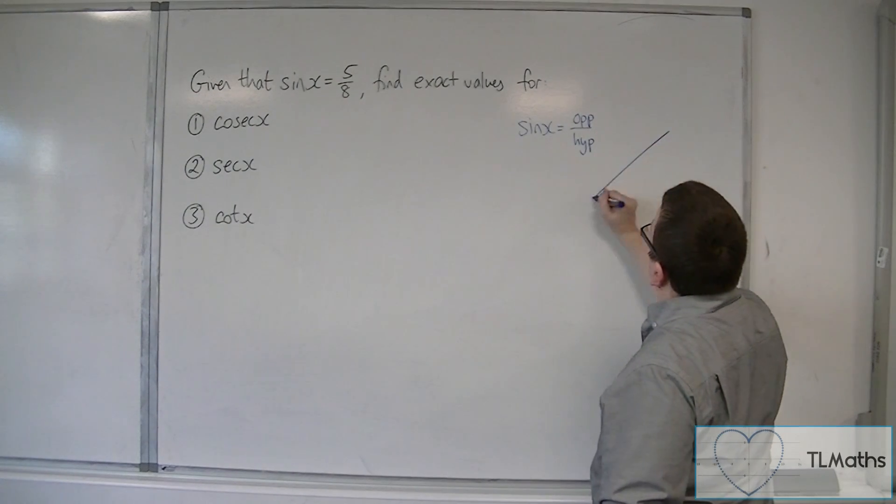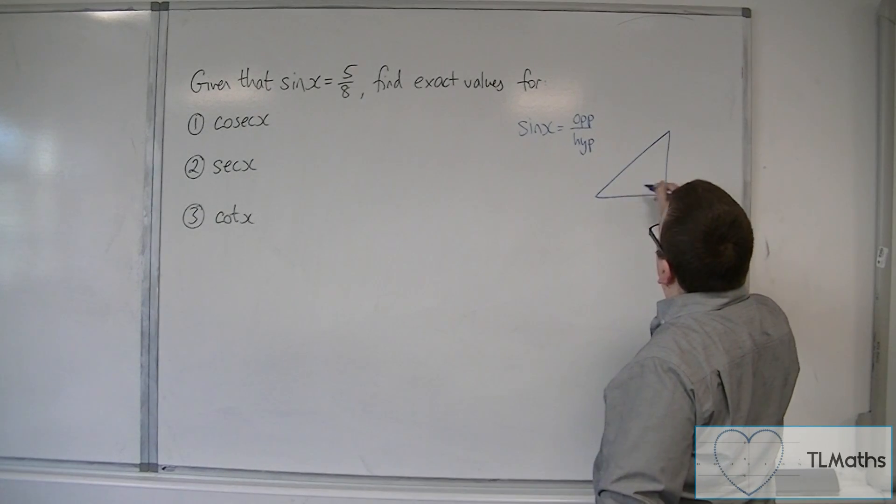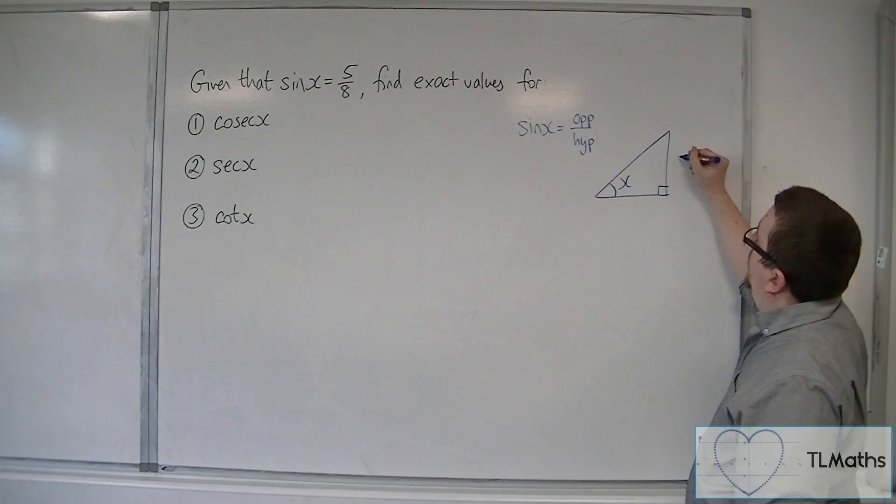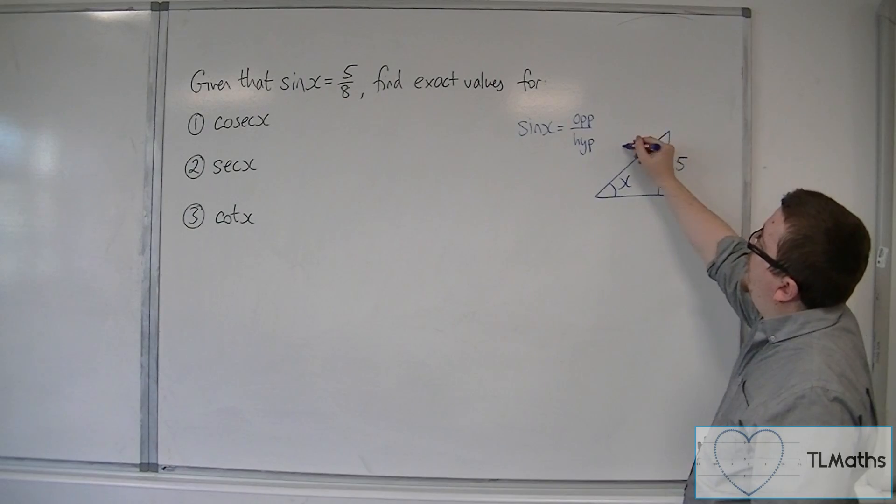We can draw a right-angled triangle where this is the angle x, and if the opposite is 5, then that length is 5, and the hypotenuse there is 8.